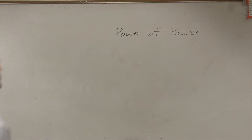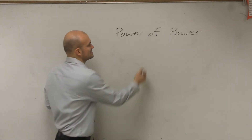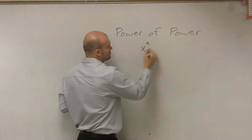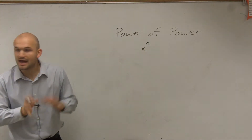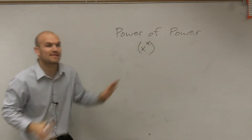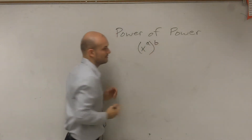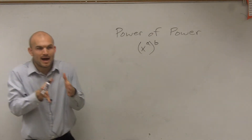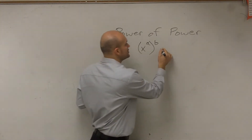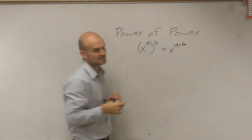So what the power of a power rule states, ladies and gentlemen: the power of a power states that if I have an exponent x and it's raised to a power, and then it's inside parentheses, and that is now raised to another power. So when you have a power that's raised to another power, what we do to simplify is we multiply the exponents.